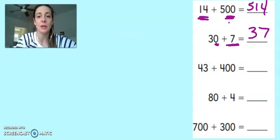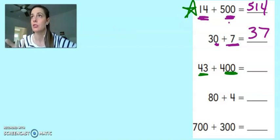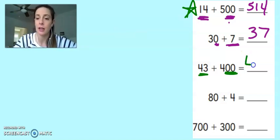The next one is very similar to the top problem. You can see I have 400 with two zeros, and I have 43 with a 10 and a 1. So 443. If I put them together, I get 443.